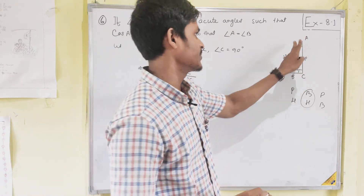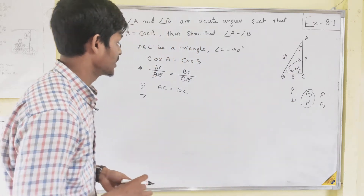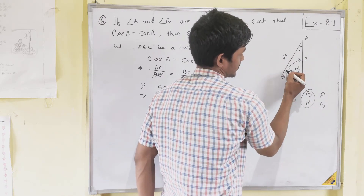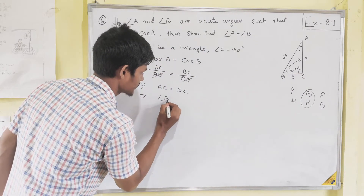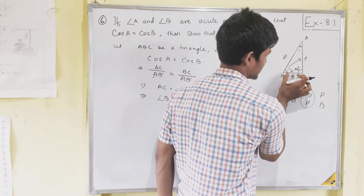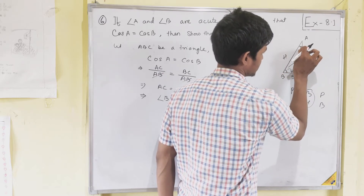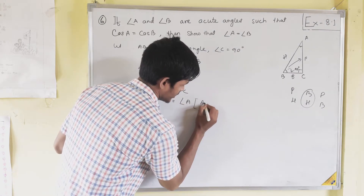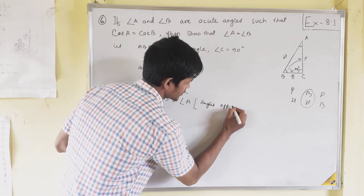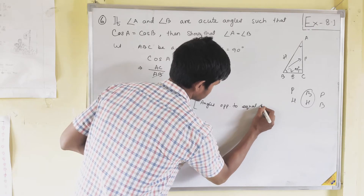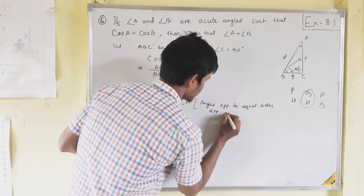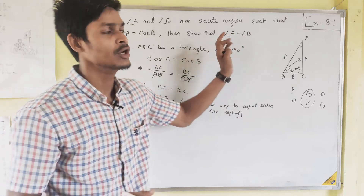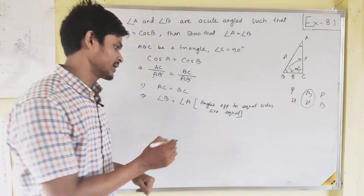Now since AC equals BC — the side AC has opposite angle B, and the side BC has opposite angle A. Angles opposite to equal sides are equal. Therefore angle B equals angle A, which is what we needed to show. So Question 6 is proved.